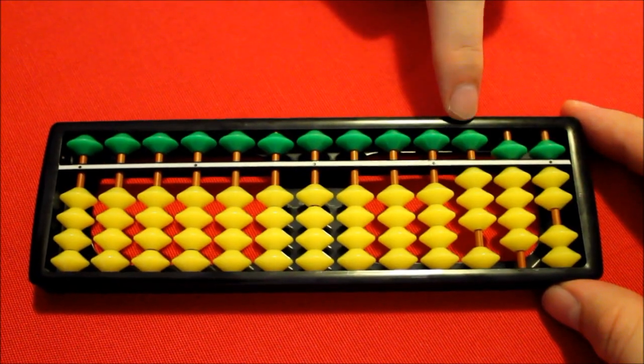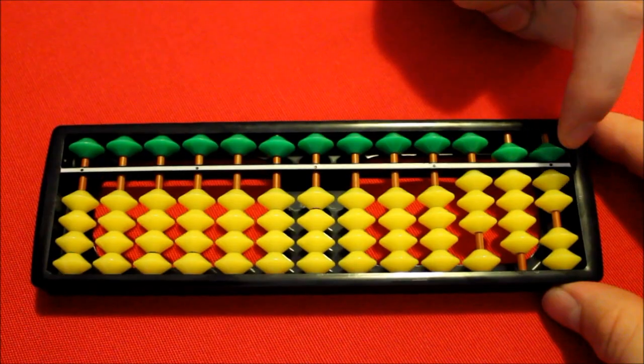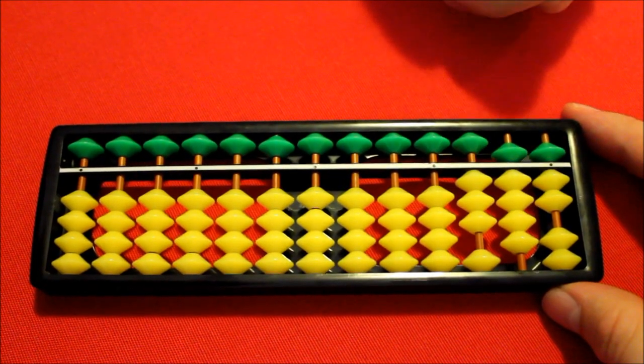And what are we left with? Three in this column. Everything's in action in this column. That's a nine. Five and two make seven. 397.